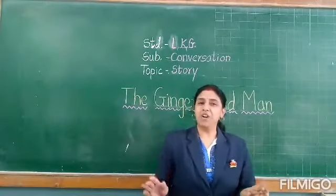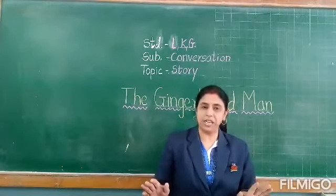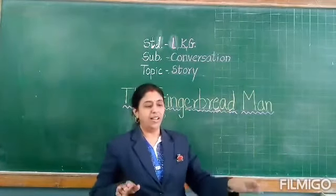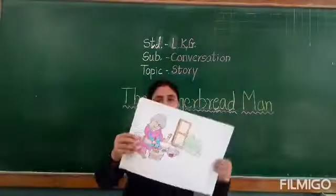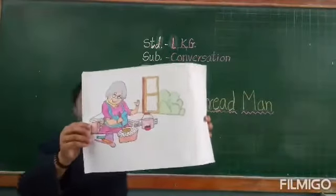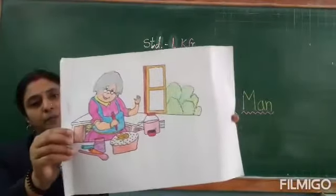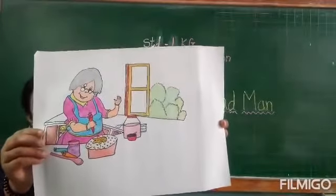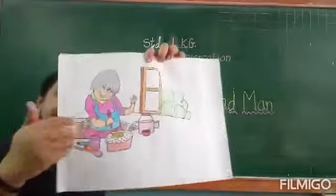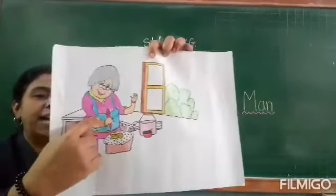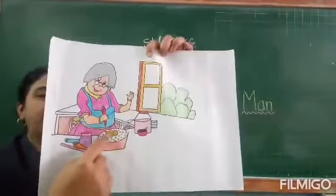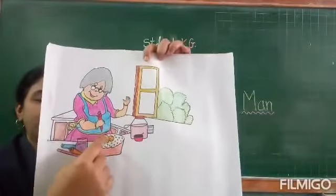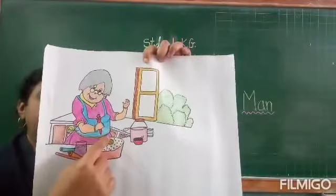Now I am going to show you some pictures which are related to our today's story. Look here. What can you see in this picture? Students, what can you see in this picture? Here is a granny. She likes to make bread, and she gave the bread the shape of a man.